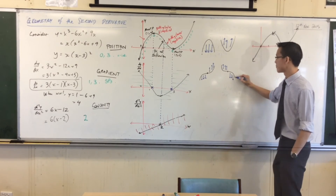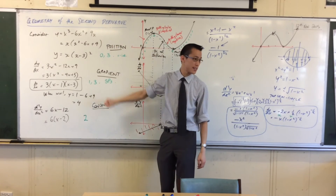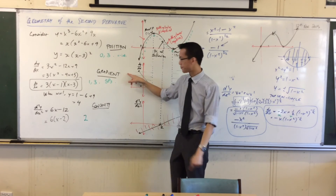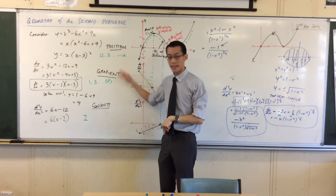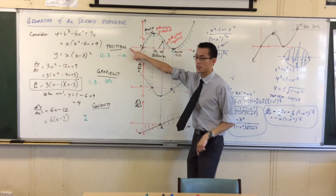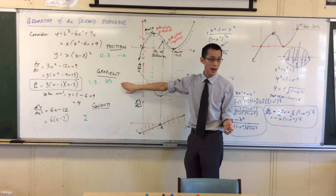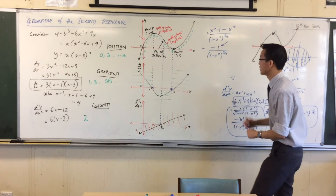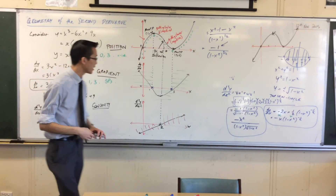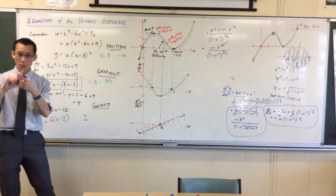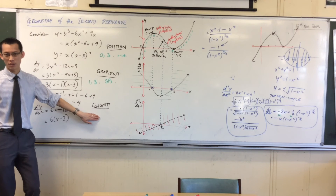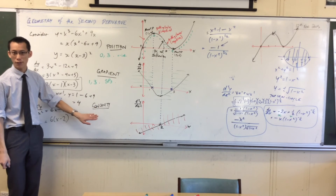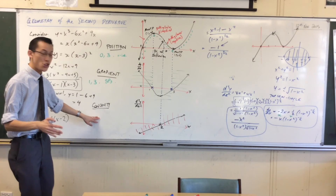We talked about a function, its first derivative, and its second derivative. The sign of the first derivative tells you about the original: are you going up or going down? The sign of the second derivative tells you: are you concave up or concave down? What do the zeros tell you? Zeros of the function: intercepts. Zeros of the first derivative: stationary points. Zeros of the second derivative: points of inflection — with an asterisk — because you can have a point of inflection without the second derivative being zero.